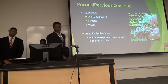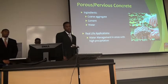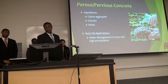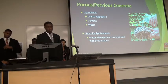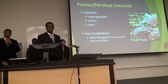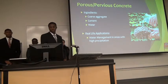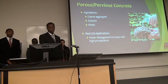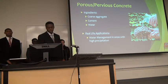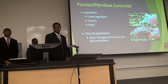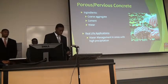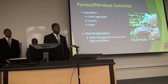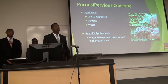Porous concrete is made of coarse aggregate, which is stones, cement, and water. Since there's no fine aggregate — which is sand — the porous concrete has voids in it, which allows water to seep through and drain. In real-life applications, you'll see porous concrete in places with high precipitation.